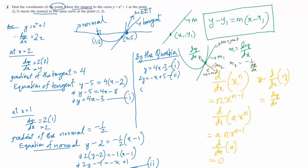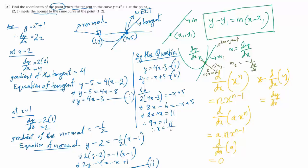Now we solve the simultaneous equations to find the point of intersection. I prefer to use the substitution method — plug the value of y from equation 1 into equation 2. Equation 1 says y equals 4x minus 3. Substituting into 2y equals minus x plus 5: 2(4x minus 3) equals minus x plus 5, so 8x minus 6 equals minus x plus 5. Therefore 9x equals 11, giving x equals 11 over 9.